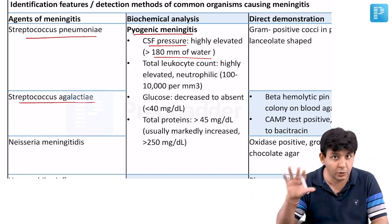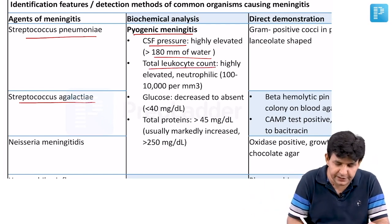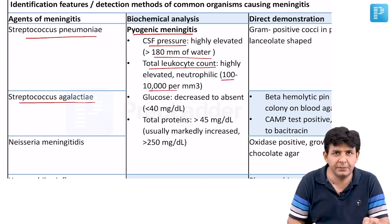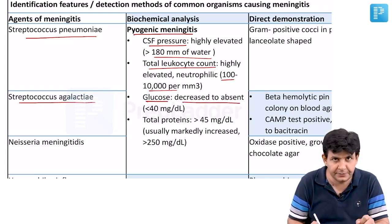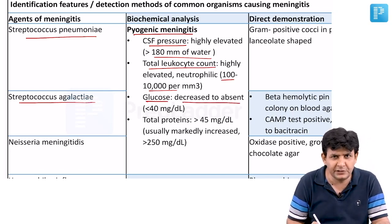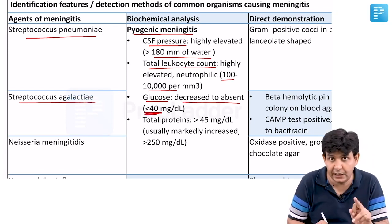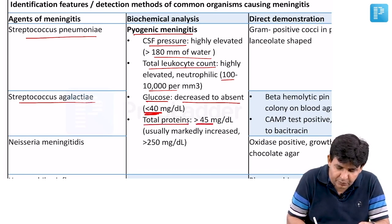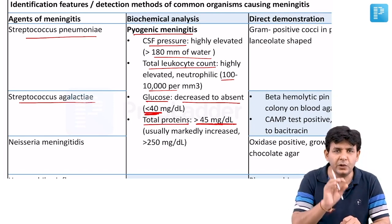In pyogenic meningitis, the CSF pressure is highly elevated - more than 180 mm of water. Total leukocyte count is also elevated, ranging from 100 to 10,000 per mm cube. Glucose is decreased to absent, less than 40 mg/dL in bacterial meningitis.